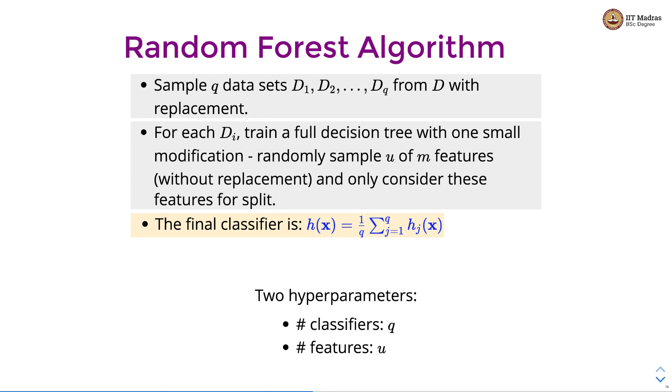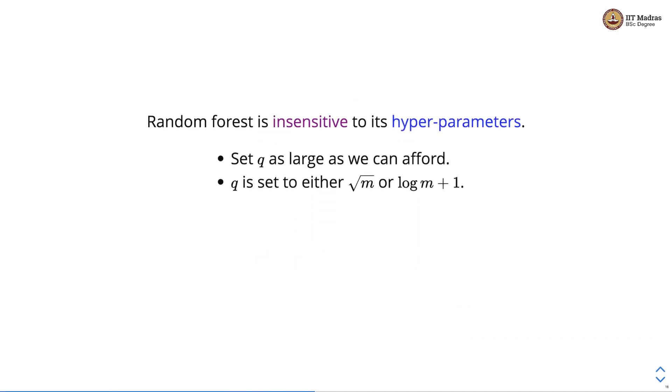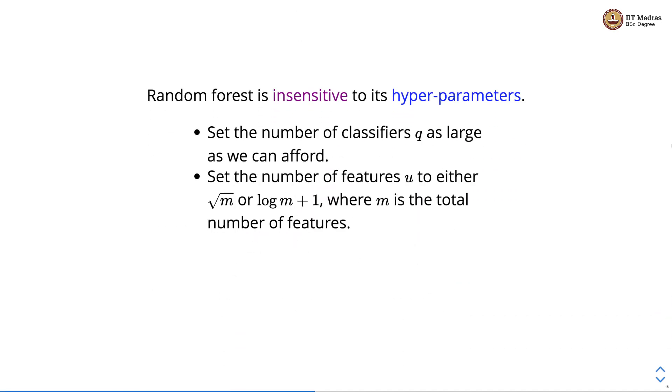There are two hyperparameters: number of classifiers q and number of features u. Random forest is insensitive to its hyperparameters. We can set the number of classifiers q as large as we can afford. The main cost is really in training these q classifiers. Set the number of features u to either square root of m or log of m plus 1, where m is the total number of features.